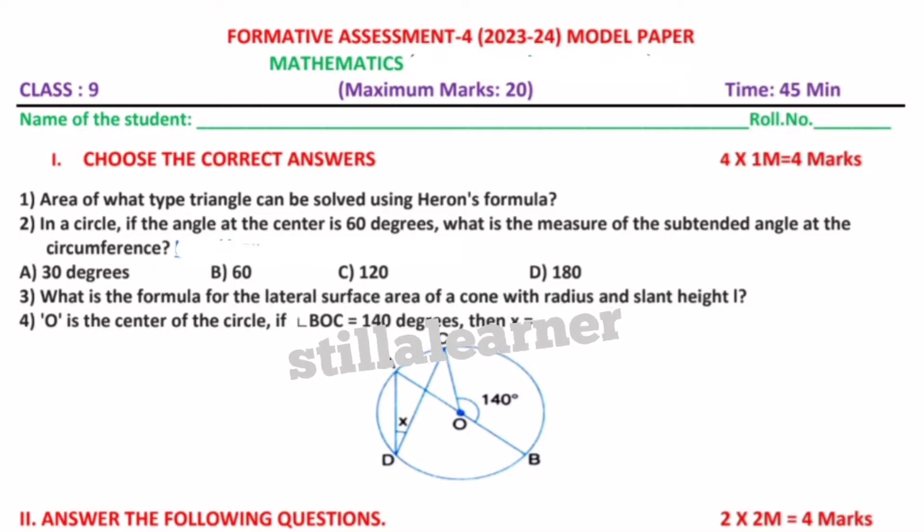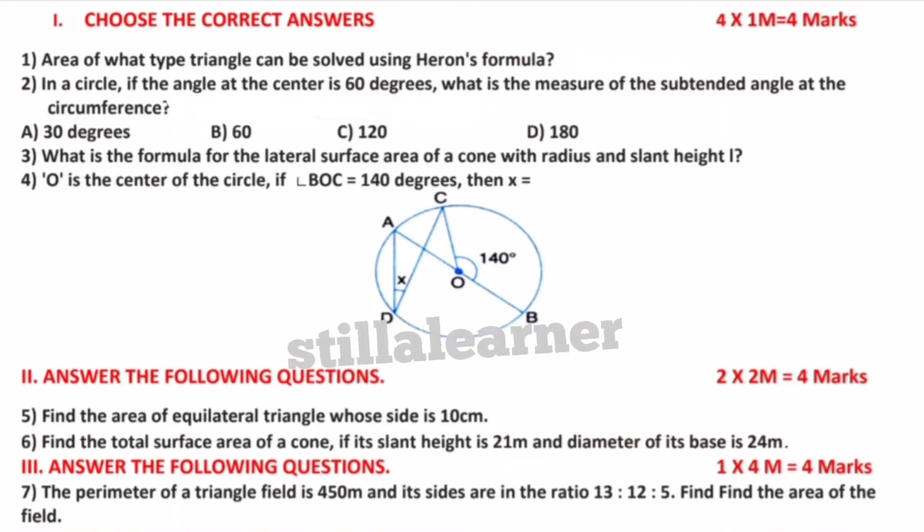In the second Roman, we have two questions. Each question carries two marks, which means two multiplied by two equals four marks. So in the second Roman, questions five and six, you have to write them down. There is no choice in these questions.